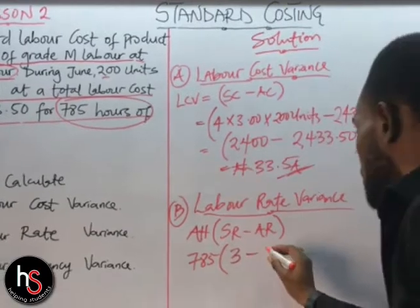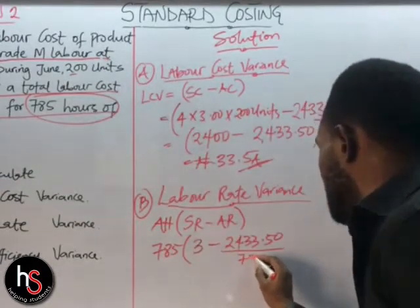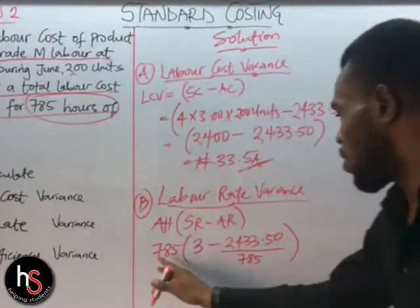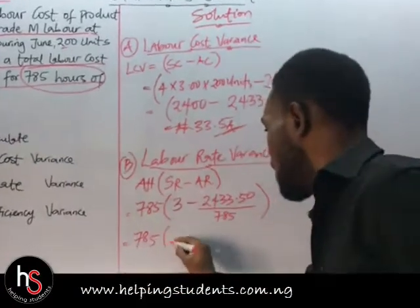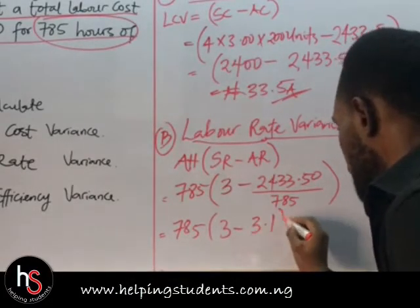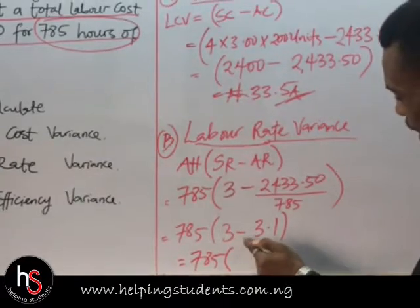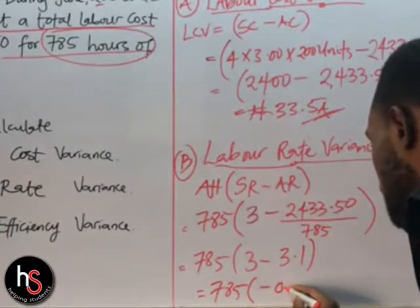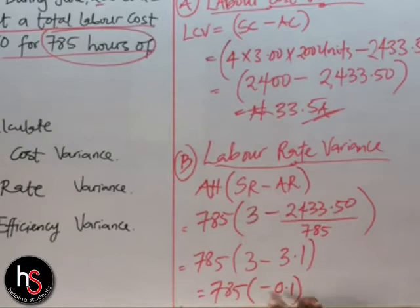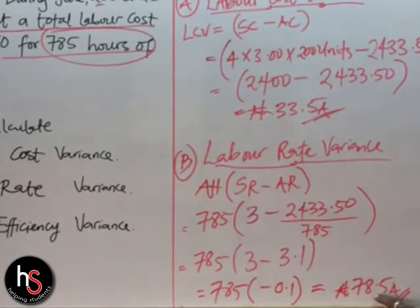So we have 785 in brackets, 3 minus the actual rate. Dividing 2,433.50 by 785 gives us 3.1. So we have 785 multiplied by (3 minus 3.1), which gives us 785 times negative 0.1. Already seeing the negative sign tells us we'll have an adverse answer. So 785 times 0.1 gives us 78.5 Adverse. You can use your calculator to confirm it.